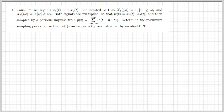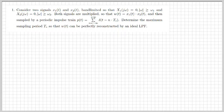The first exercise gives two signals x1 and x2 that are band-limited. These are multiplied to obtain the signal w(t), which is the product x1(t) times x2(t). This signal w(t) is then sampled by a periodic impulse train. We need to determine the maximum sampling period such that w(t) can be reconstructed by an ideal low-pass filter. From our theory class, we learned the Nyquist frequency — the minimum sampling frequency such that a signal can be reconstructed without losing any information.